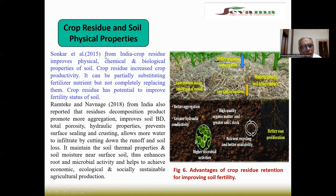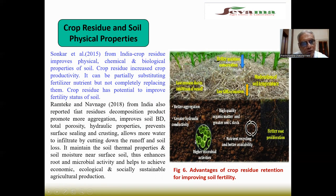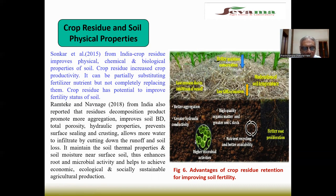Sunkar and co-workers 2015 from India found that crop residue improved physical, chemical and biological properties of soil and increased crop productivity. Our main aim is to increase crop productivity with the help of crop residue. It can partially substitute fertilizers and nutrients but not completely replace them. Crop residue has the potential to improve the fertility status of soil, and there is a direct relationship between crop production and fertility status — when fertility status is rich, higher crop production results.